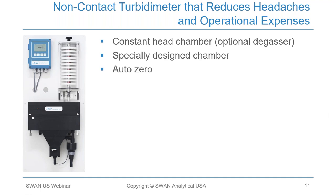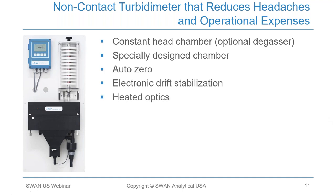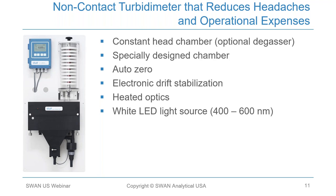The instrument auto-zeros every night to eliminate errors due to stray light. Swan uses electronic drift stabilization to eliminate impacts from stray current, and heated optics maintained at a constant 40°C address condensation that occurs in pipe galleries during summer. Because the optics are heated, users are not required to periodically change a desiccant or clean the optics for moisture. The instrument uses a white LED source from 400 to 600 nanometers per EPA regulations — a high-quality, long-lasting LED with a sensor that monitors intensity and auto-corrects if it starts to fade. Instruments have been in the field for over 10 years with no bulb failures.